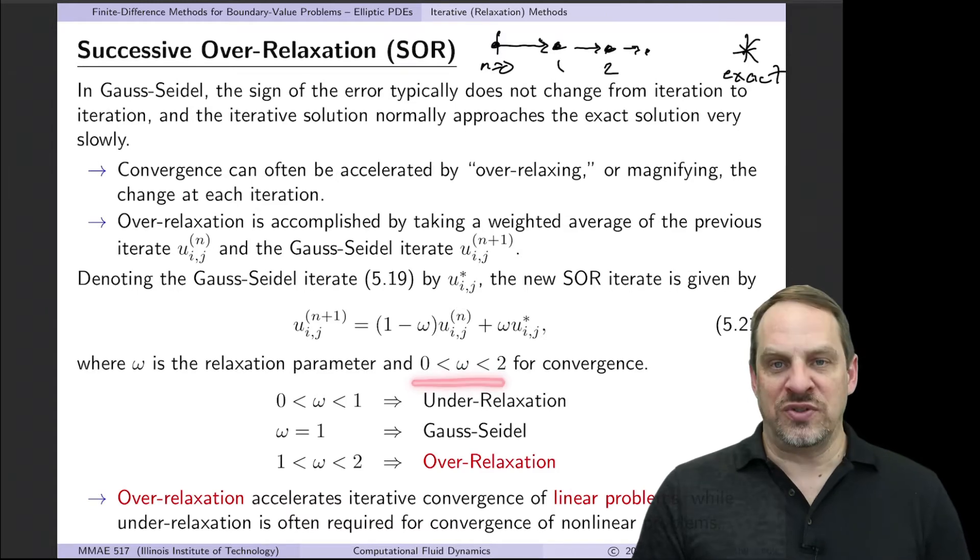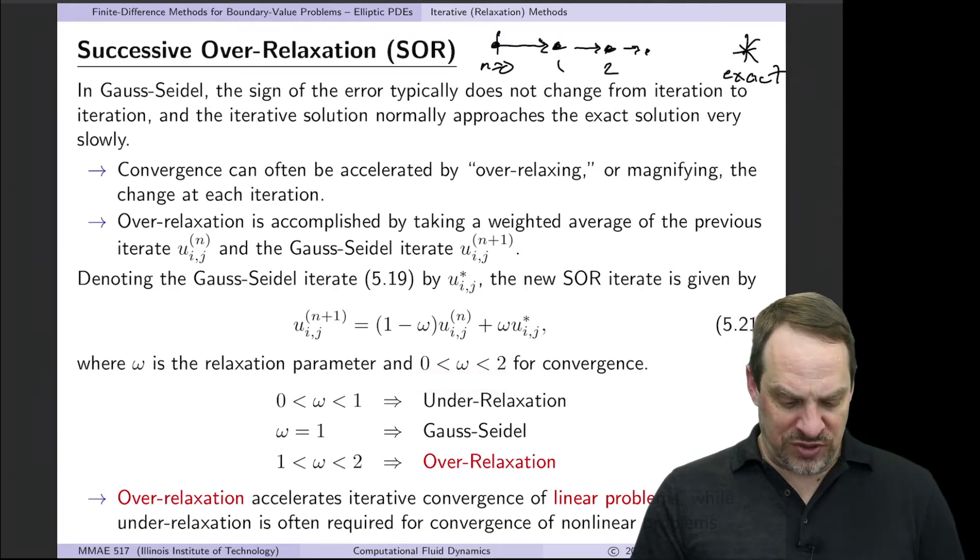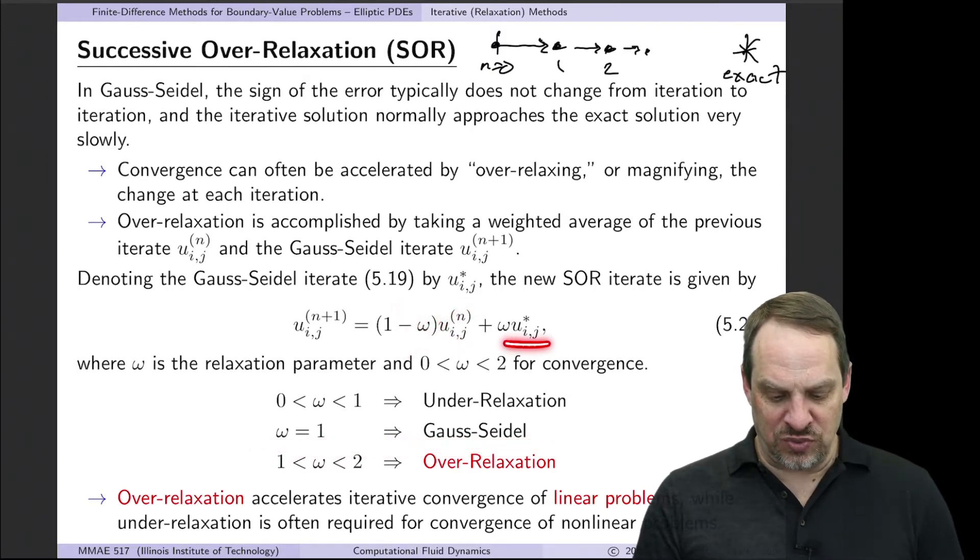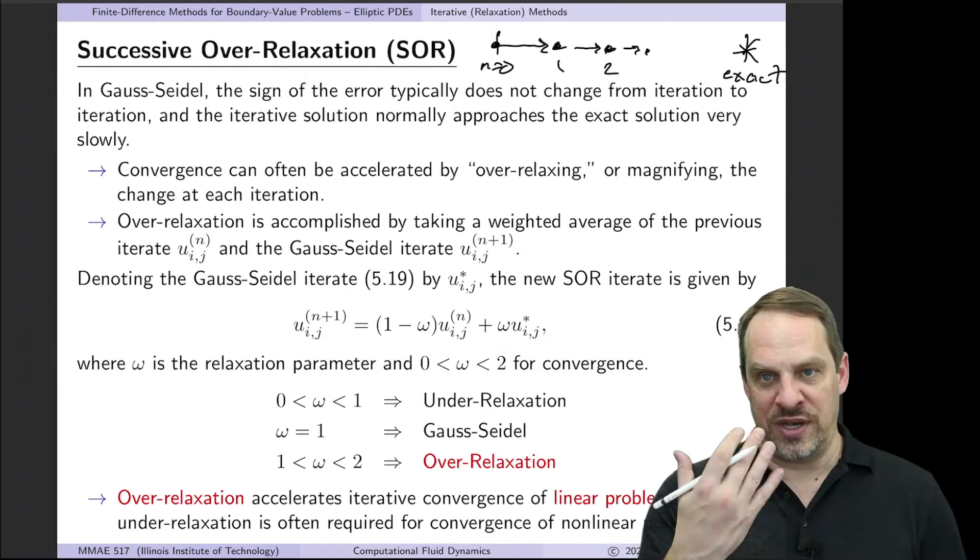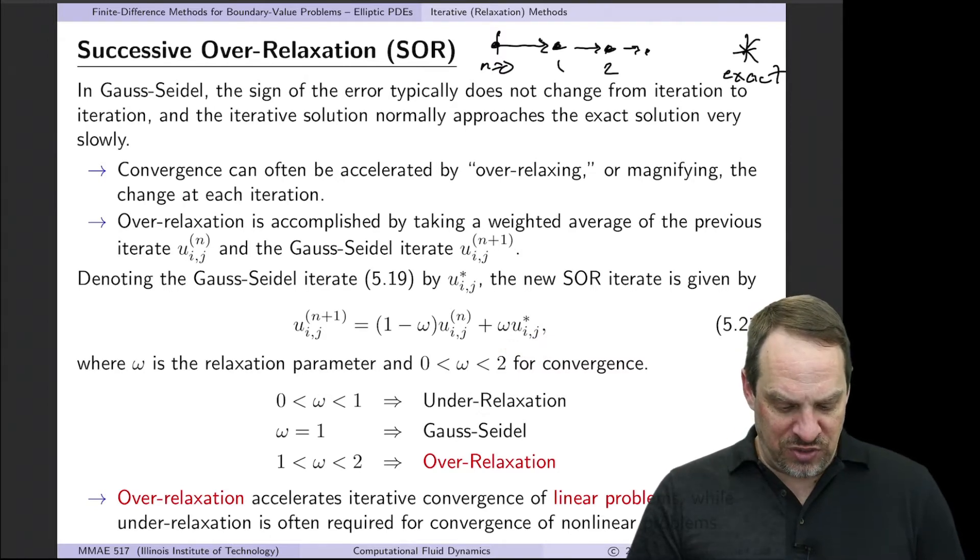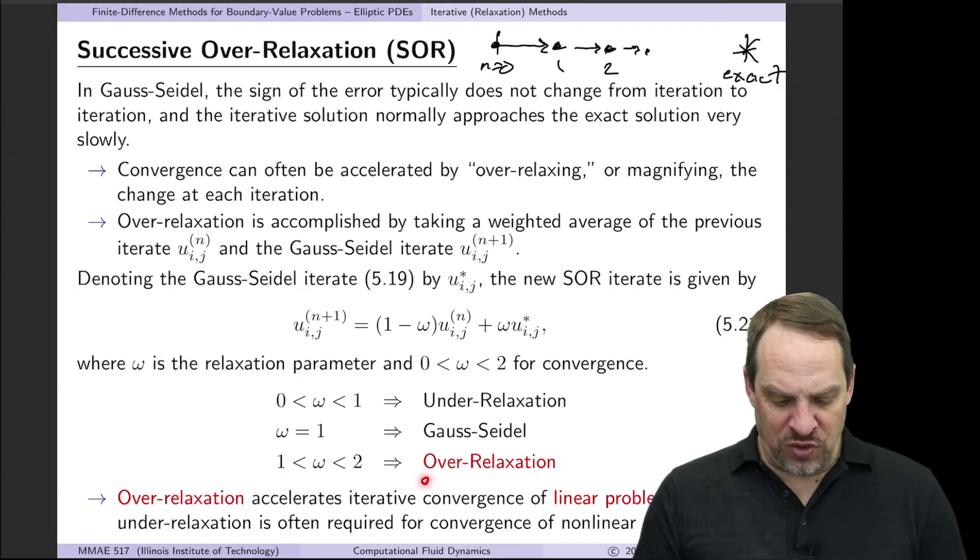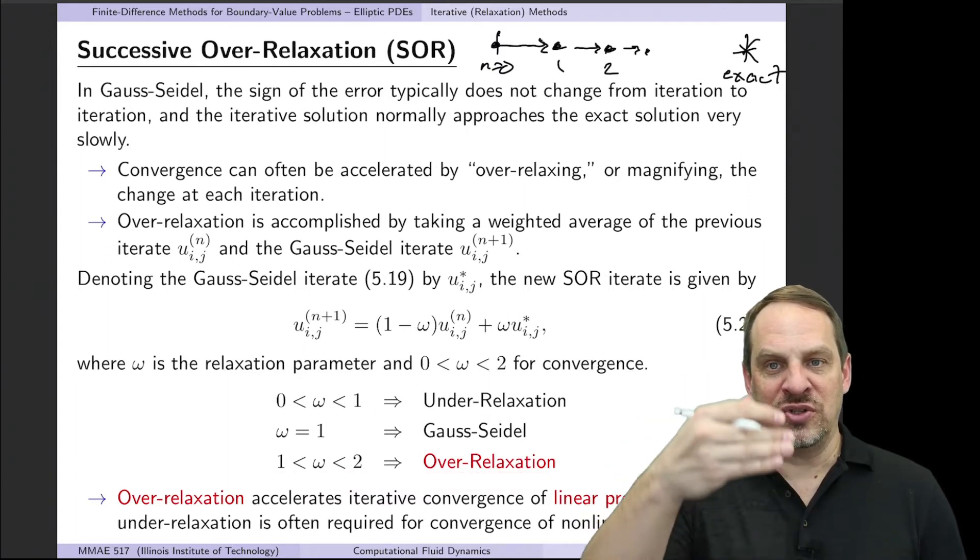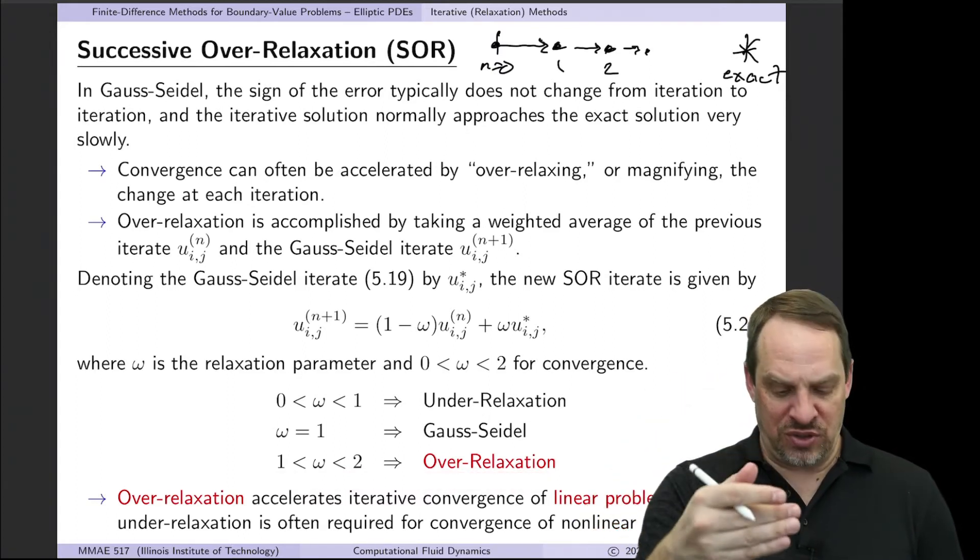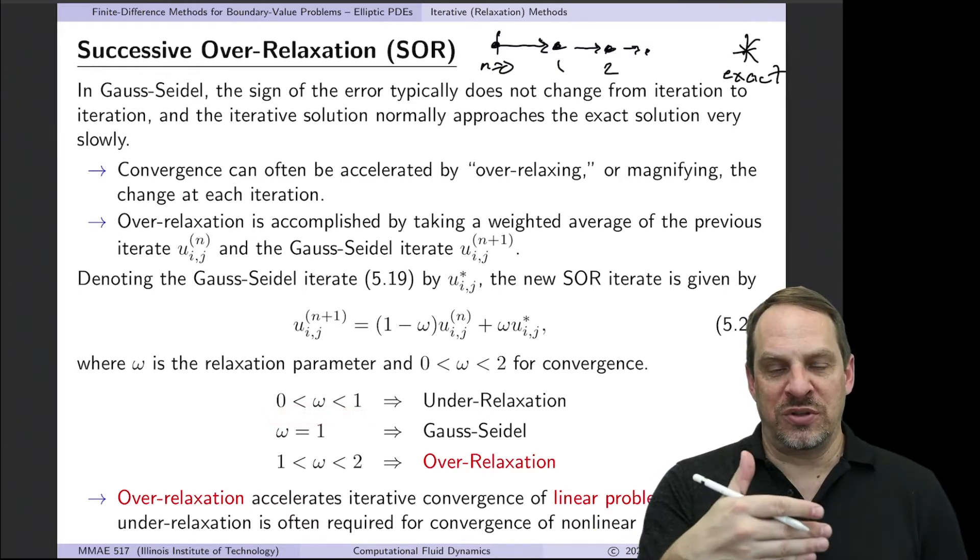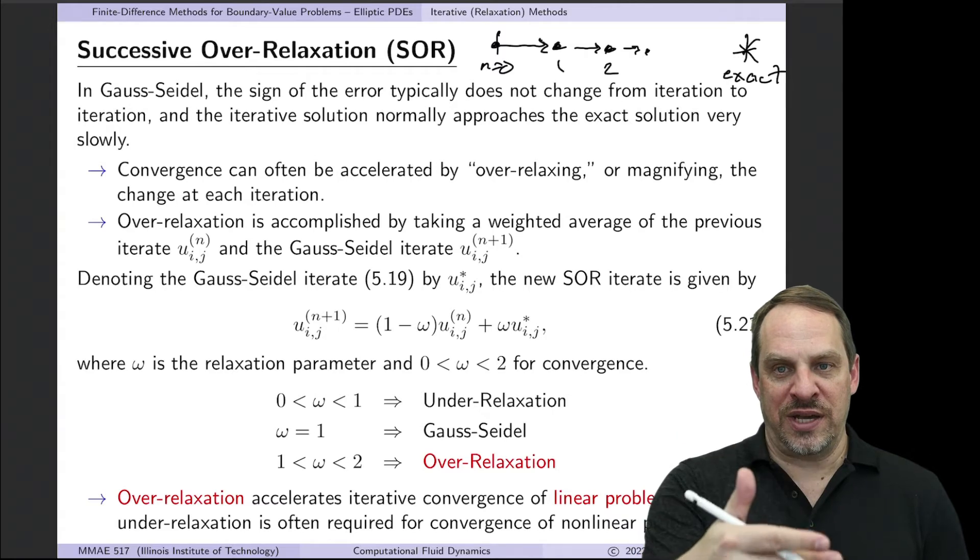The value of omega is between 0 and 2 for convergence. Omega equal to 1 corresponds to Gauss-Seidel, because that would get rid of this first term, and it's just 1 times u_ij star, which is Gauss-Seidel. If we increase the value of omega from 1 to 2, then we have over-relaxation. We're taking a bigger step than Gauss-Seidel tells us to. If we have omega between 0 and 1, then we're taking smaller steps than is prescribed by the Gauss-Seidel method.